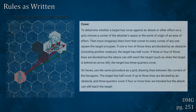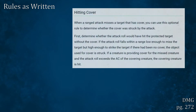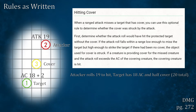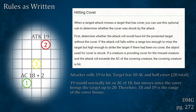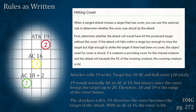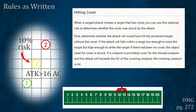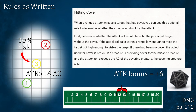There is also an optional rule later in the DMG on page 272 for how to deal with a creature serving as cover being hit by a stray attack. When a ranged attack misses a target that has cover, you can use this optional rule to determine whether the cover was struck. First, determine whether the attack roll would have hit the protected target without the cover. If the attack roll falls within a range low enough to miss the target but high enough to strike the target if there had been no cover, the object used for cover is struck. If a creature is providing cover and the attack roll exceeds the AC of the covering creature, the covering creature is hit. Essentially, a creature acting as cover has a 10 or 25% chance for the attack to hit them instead, provided the original attack beats their AC — 2 or 5 of the possible outcomes of the d20 correlate to the cover being struck.